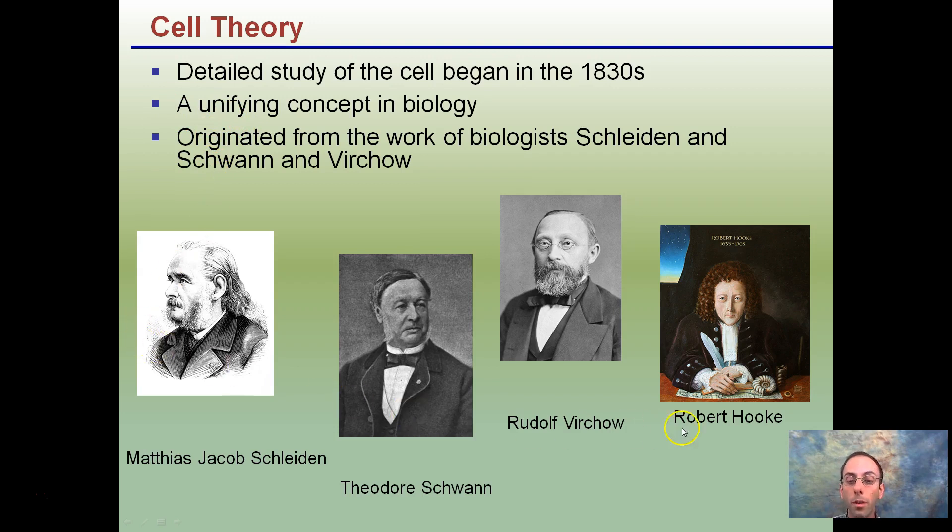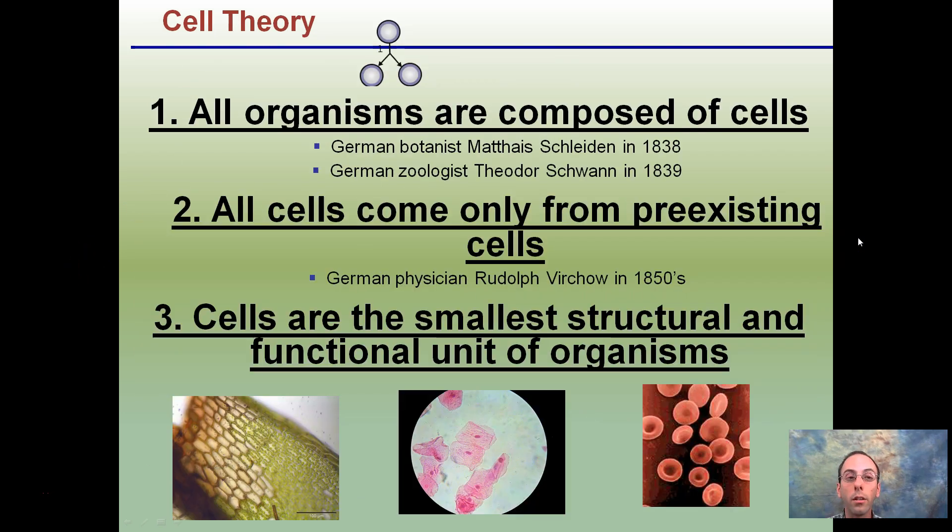It originated from work from these scientists. Robert Hooke again was first. Other biologists, Schleiden and Schwann and Virchow are three other scientists that were important to develop this cell theory. Again this is a very early concept trying to get an idea or a handle of what these actually structures are. And this is kind of what they came up with. It's kind of a summary here.